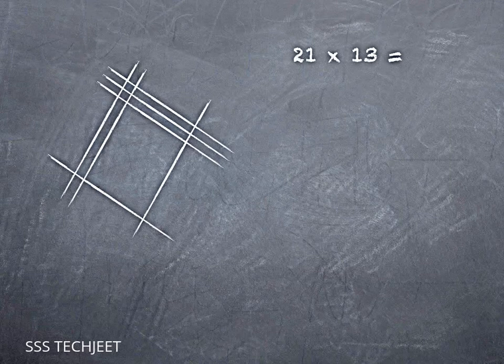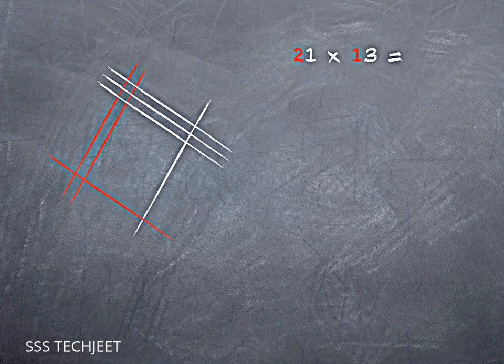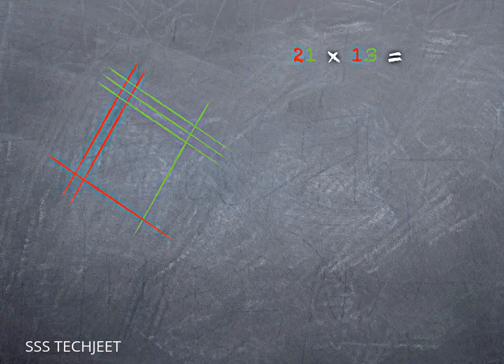You'll notice that this really isn't much different from the way we write things in numerals. That 2 in 21, for example, isn't really a 2. It's a 20. And those two lines on the left aren't really two lines. They're two lines of 10 each. We can color code them to make it a little bit simpler to keep track of. So there are the tens and the ones.